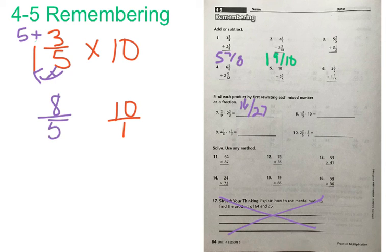Denominator stays the same. So we have 8 over 5 times 10 over 1. This is a case where we can cross-reduce or cross-simplify. 5 is a factor of 10. 5 can go into 5 one time. 5 can go into 10 two times.